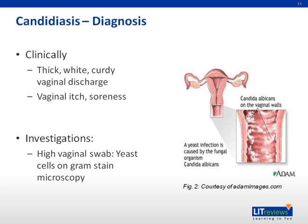Typical Candida infection presents with thick, white, curdy cottage cheese-like discharge associated with vaginal itch and soreness. Occasionally, it can be associated with superficial dyspareunia or external dysuria. Clinically, vulvovaginal erythema and excoriation are common. A high vaginal swab is used for diagnosis, and yeast cells are seen on Gram stain microscopy.